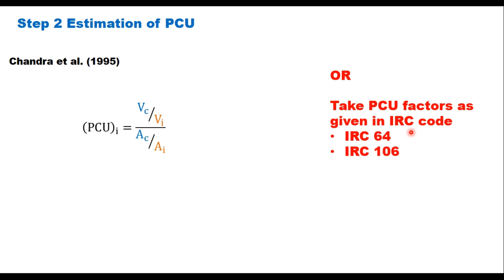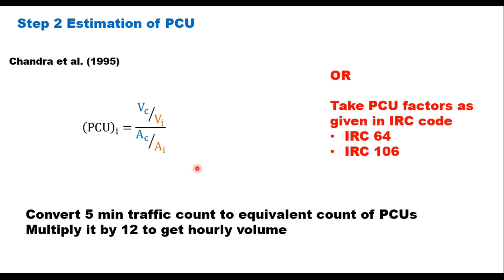IRC 64 can be used for interurban roads and IRC 106 can be used for urban streets or urban roads. But it is always recommended to use this PCU equation to calculate PCU factor for each 5 minute interval. Now convert this 5 minute traffic count to equivalent count of PCU and then multiply it by 12 to get hourly volume.